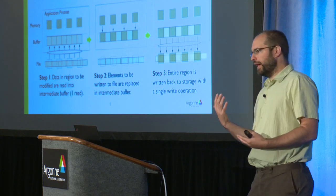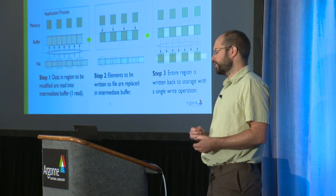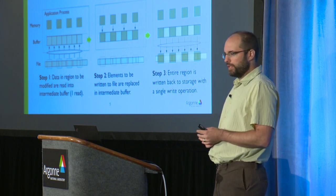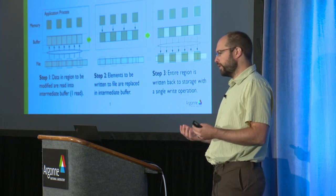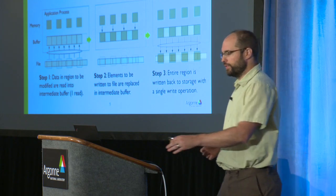We call this data sieving in the IO libraries, because we're pulling in a bunch of data. The name is a better analogy in the read case — you pull in 4K or a megabyte of data, keep just the pieces you want, and discard the rest. That works out better than reading little pieces because of the latency problem. Of course, if you're only reading one byte out of a megabyte, maybe a smaller request would be fine; but if you're going to read half that megabyte, this is a point where we can tune with different parameters.